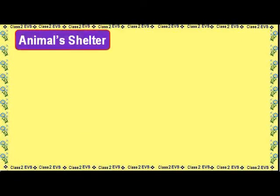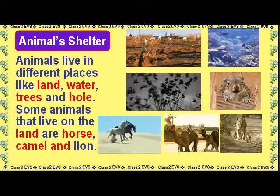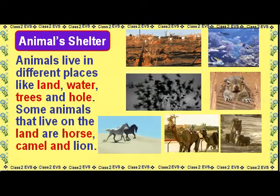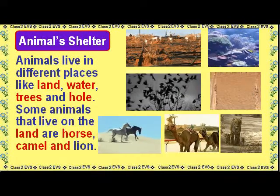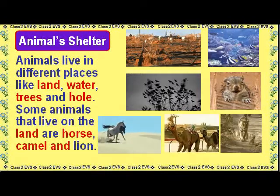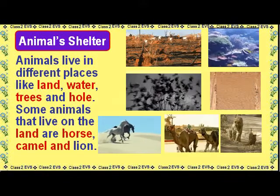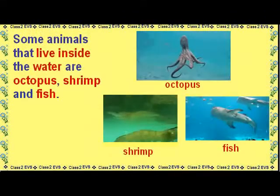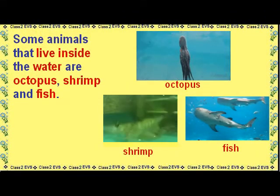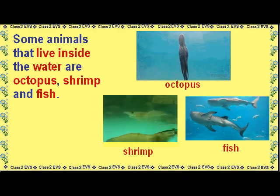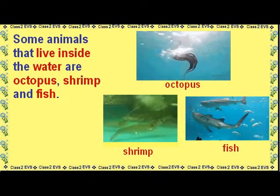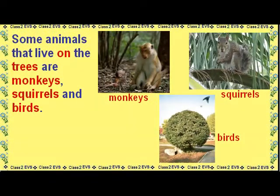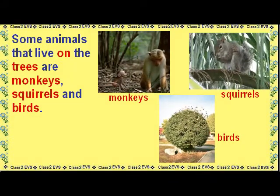Animals Shelter: Animals live in different places like land, water, trees, and holes. Some animals that live on the land are horse, camel, and lion. Some animals that live inside the water are octopus, shrimp, and fish. Some animals that live on the trees are monkeys, squirrels, and birds.